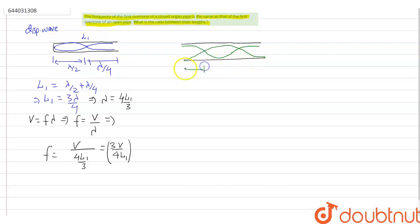So this one is lambda by 4, this one is lambda by 2, and this is again lambda by 4.